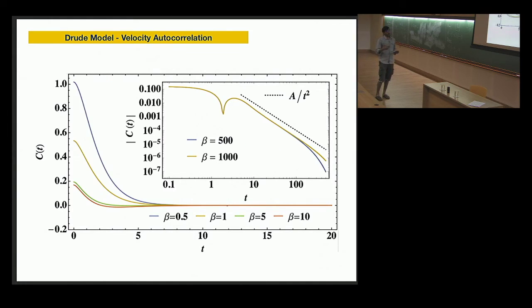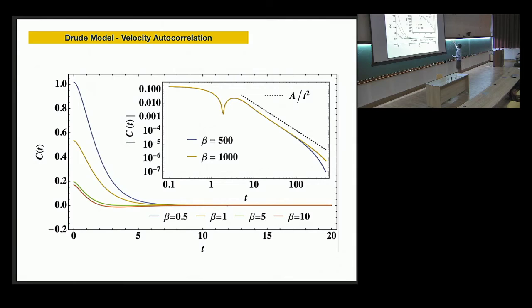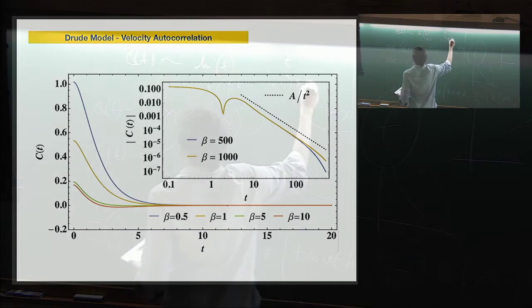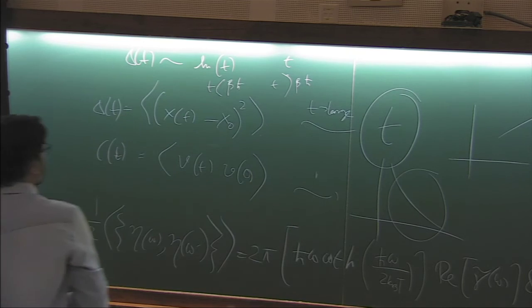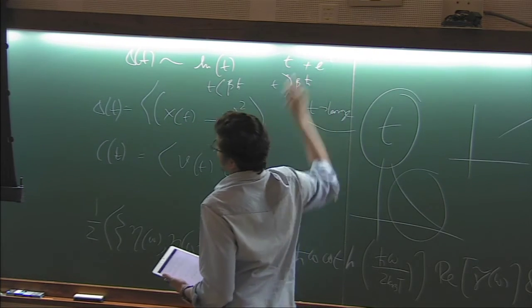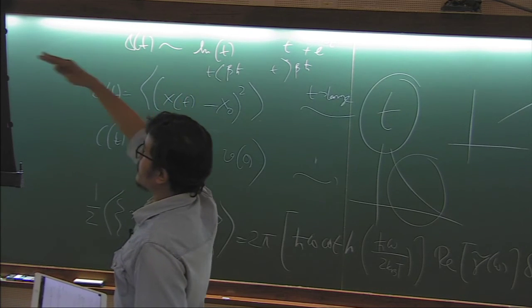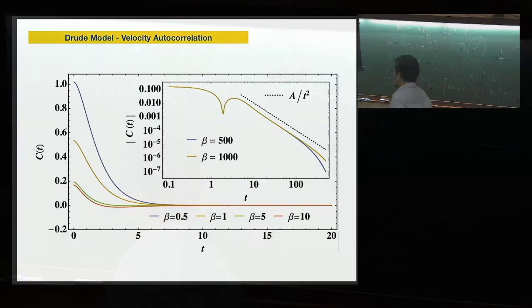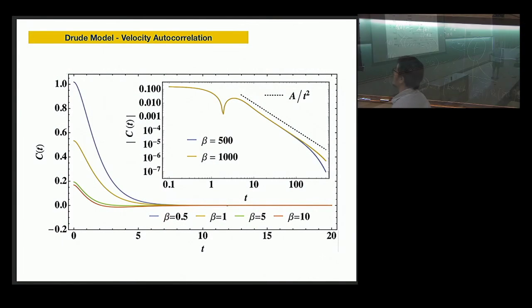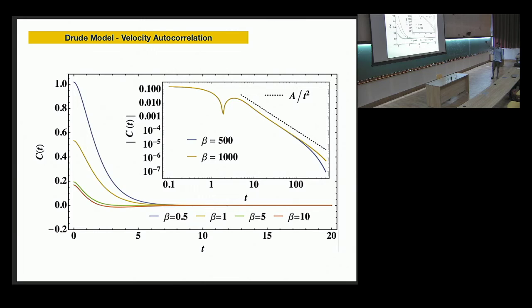And so in Drude also one can see that, because there is log t, so this is very simple. If I just write, so delta t goes as log t before t is less than beta h bar, and t is greater than beta h bar, you can see that velocity autocorrelation t plus basically e to the power minus t correction. So first it decays and then it is, because it is log t, if you take the double derivative, you will get one by t square, and then again it decays exponentially. This is one feature in Drude model which we have shown both numerically and analytically.